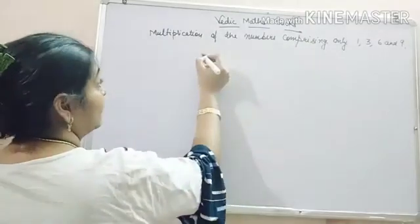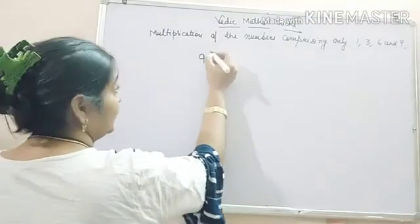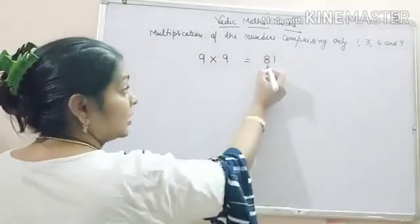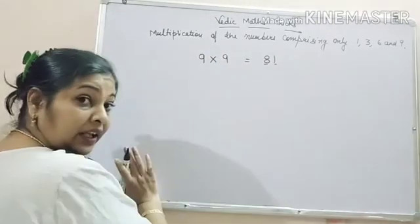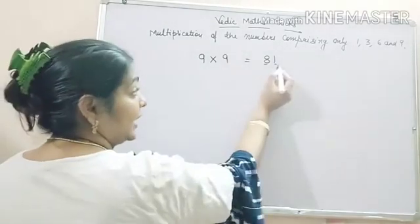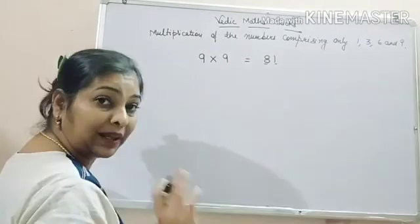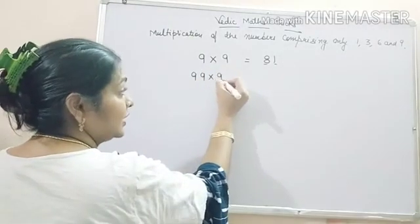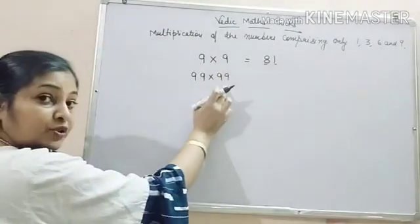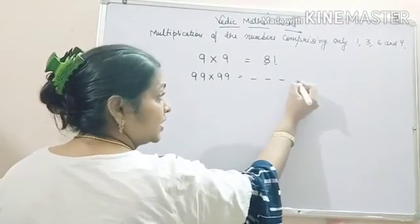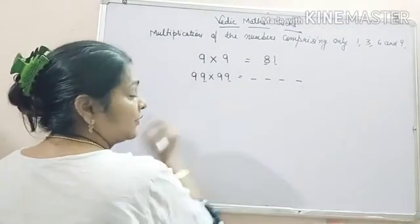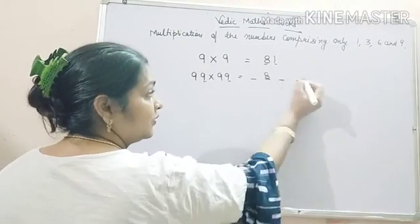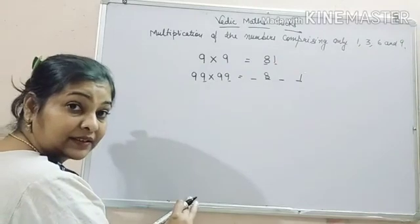Now the next number is 9. How to find the product of the number comprising of 9 only? 9x9 are 81, so our numbers are 81, 8 and 1, on which we have to apply the operation. So 99 into 99, our answer should be 4 digit number, 1, 2, 3, 4. You have to multiply this. Leave 1, put 8, leave 1, put 1. Now what is the next step?